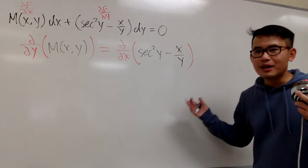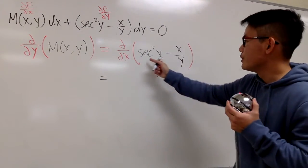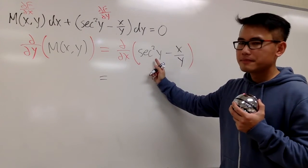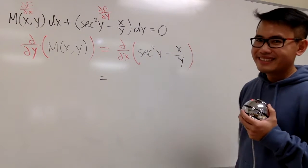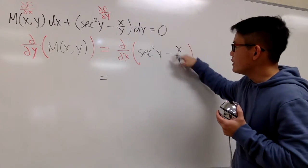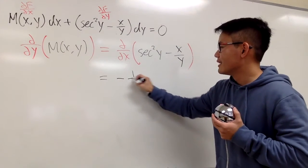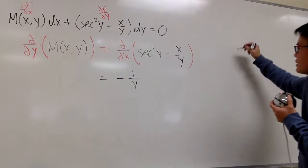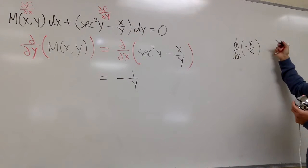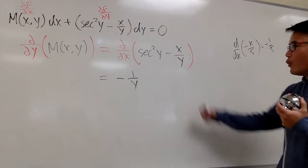Now why don't we just do some partial derivatives? On the right-hand side, x is the variable and y is the constant. Secant squared y is just going to be 0. And here we have x to the first power in the numerator. When we differentiate this with respect to x, we get negative 1 over y only. Just think about this: if you take the derivative of negative x over 5, you get negative one-fifth. Same idea here — y is the constant.